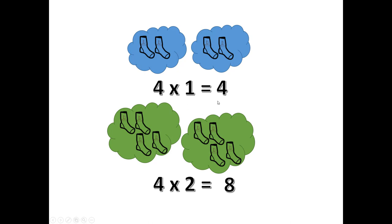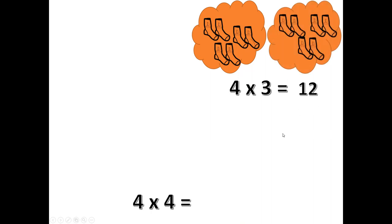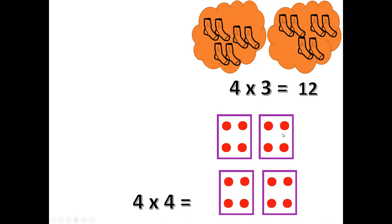One more time. 4 times 1 is 4. 4 times 2 is 8. 4 times 3 is 12. 4 times 4. Double the 4. Double-double. 4 times 4 is 16.